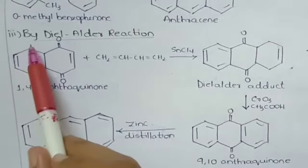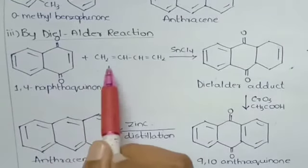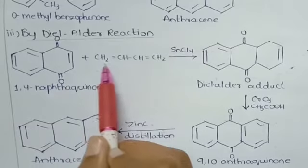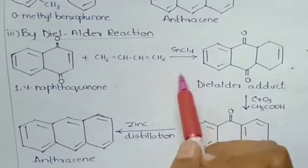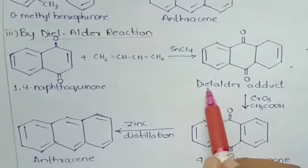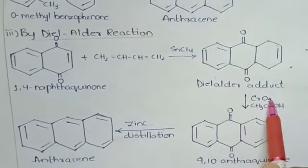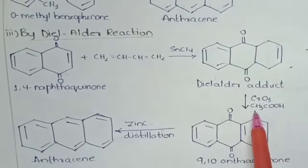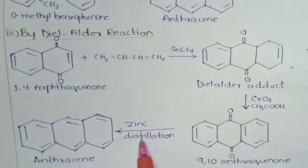The next reaction is by the Diels-Alder reaction. When 1,4-naphthaquinone reacts with 1,3-butadiene in the presence of tin tetrachloride, it produces a Diels-Alder adduct, which in the presence of chromium trioxide and acetic acid produces 9,10-anthraquinone. 9,10-anthraquinone on zinc distillation produces anthracene.